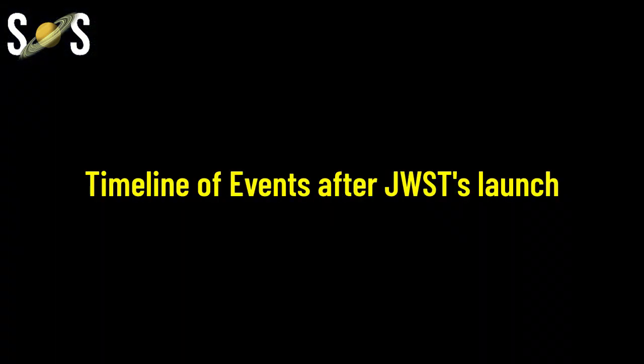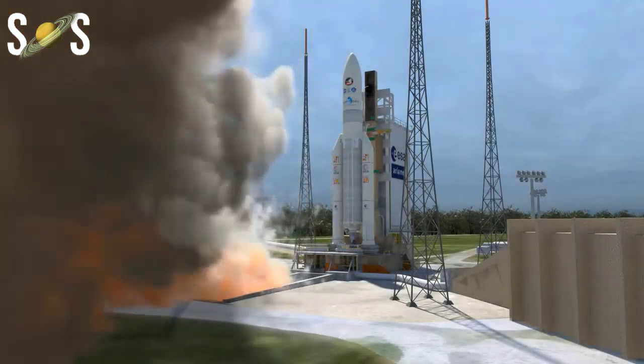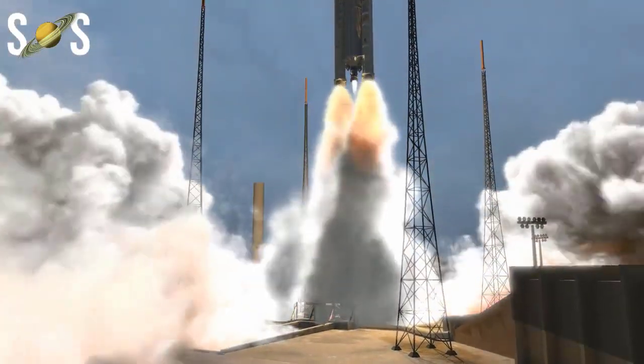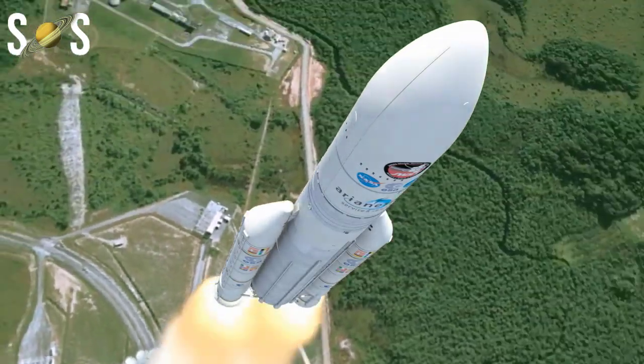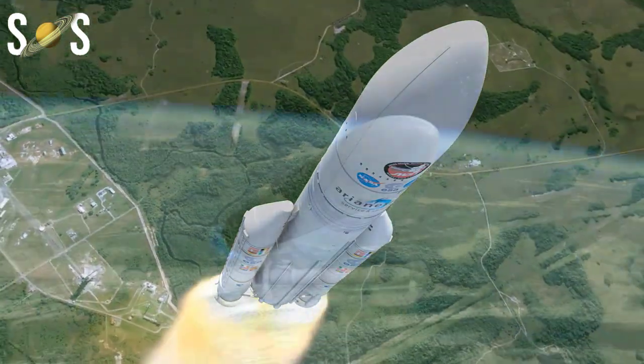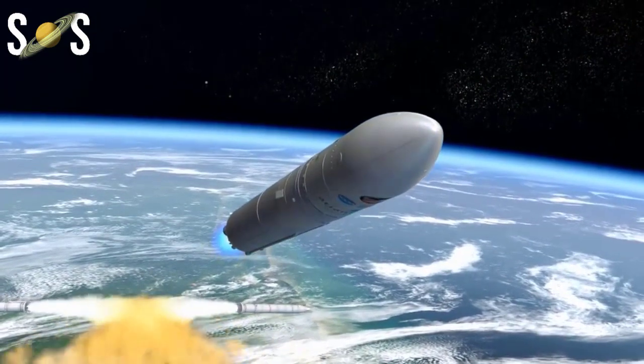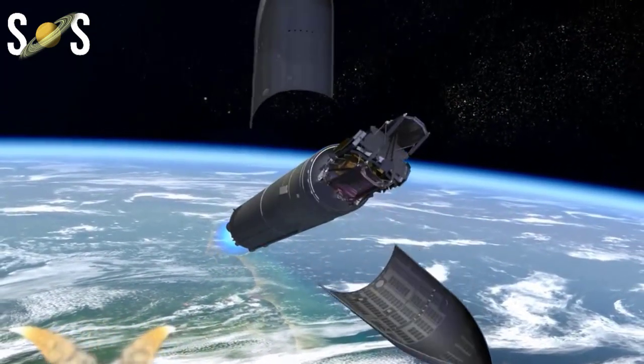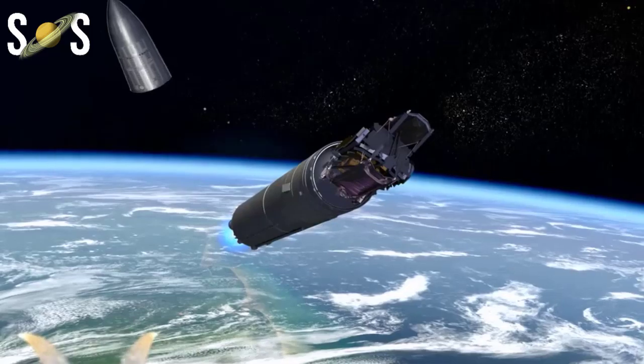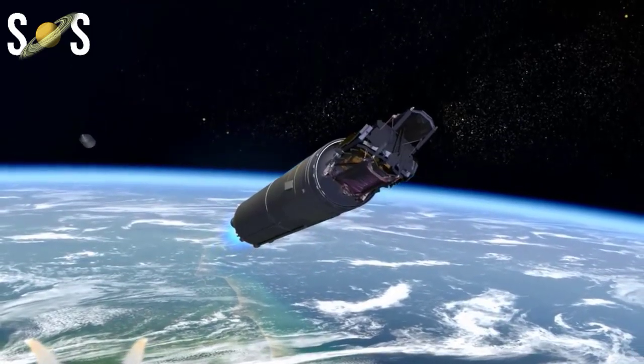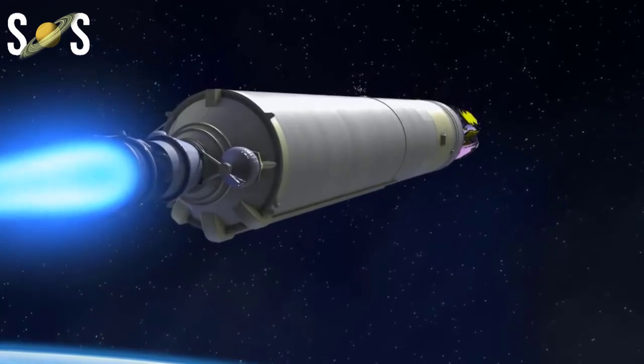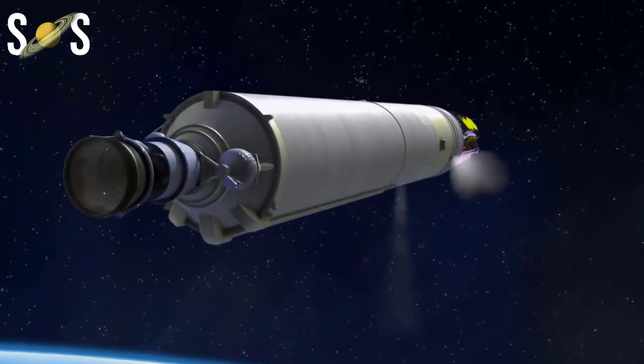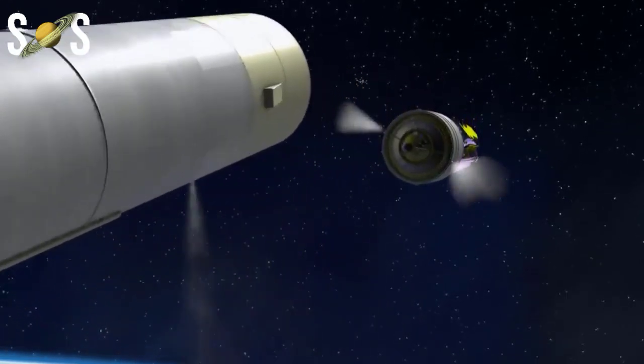Timeline of events after launch: In the first hour, the ride to space, solar array deployment, and free flight. The Ariane 5 launch vehicle will provide thrust for roughly 26 minutes after a morning liftoff from French Guiana. In the first day, mid-course correction to L2. Ariane will have sent Webb on a direct route to L2 without first orbiting Earth. During the first day, the first and most important trajectory correction maneuver using small rocket engines aboard Webb itself. In the first week, sunshield deployment.